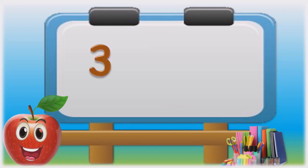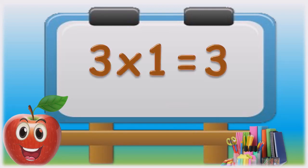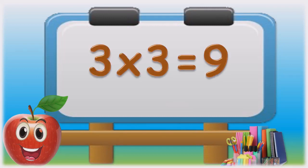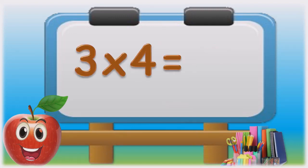Three ones are three. Three twos are six. Three threes are nine. Three fours are twelve.